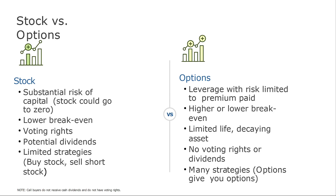With stocks, the only strategies are buy or sell — nothing more. With options, we have leverage with risk limited to the premium paid, which exponentially raises your potential benefit. There is a higher or lower break-even depending on the type of trade. The biggest challenge — depending on which side of the trade you are — is time: the life of the option. With a stock you can hold it forever; with an option it always expires — in one day, one week, one month, one year — making it a decaying asset. You also have no voting rights or dividends, but that matters little unless you hold a large portfolio percentage.